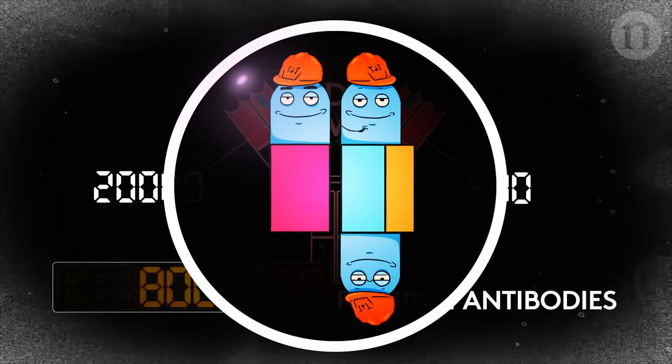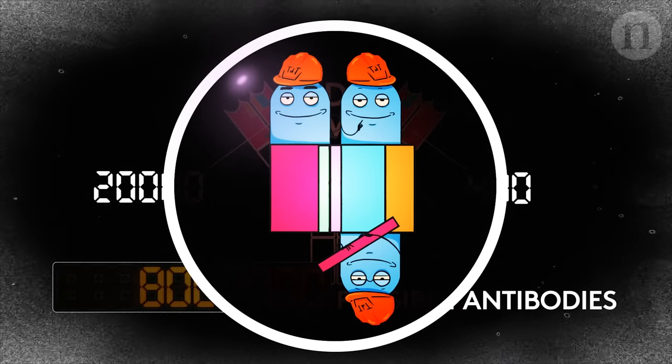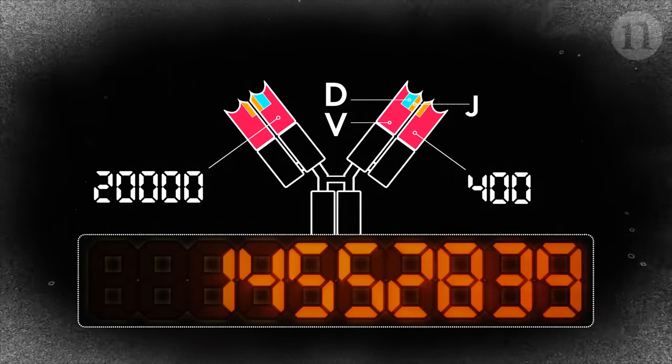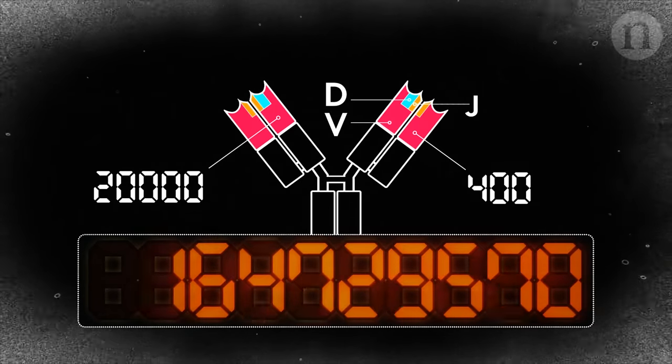During the joining, extra DNA is added or removed at the junctions of the segments, which takes our antibody diversity from the millions into the billions.